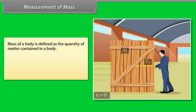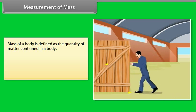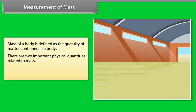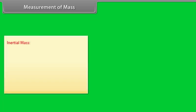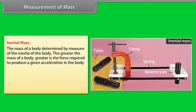Measurement of mass: Mass of a body is defined as the quantity of matter contained in a body. There are two important physical quantities related to mass of a body: inertial mass and gravitational mass. Inertial mass: The mass of the body is determined by measure of the inertia of the body. The greater the mass of a body, greater is the force required to produce a given acceleration in the body. F = MA, or M = F/A.